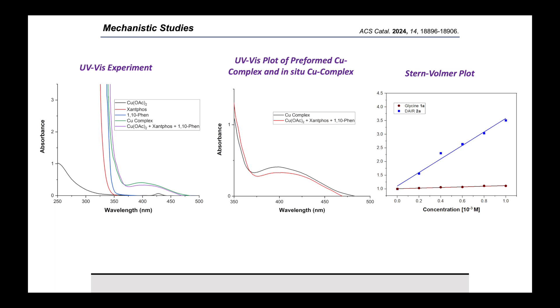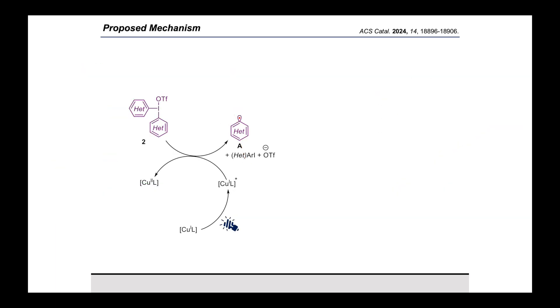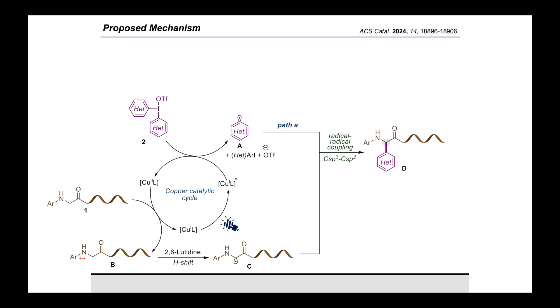By considering all the control experiments, we propose the suitable mechanism of the reaction. Initially, in-situ generated copper(I) complex gets excited upon irradiation of blue LED, which then undergoes single electron transfer with diaryl iodonium reagent forming aryl radical and copper(II) species. Then the copper(II) species receives an electron from glycine derivatives, comes back to its original copper(I) state and generating nitrogen radical cation of the glycine derivative, which then forms the alpha-amino-carbon radical in the presence of a base. Finally, persistent radical effect-driven Csp3-Csp2 radical-radical cross-coupling between A and C delivers the desired cross-coupled arylated product D.